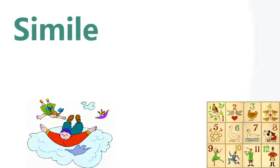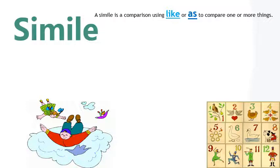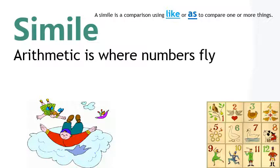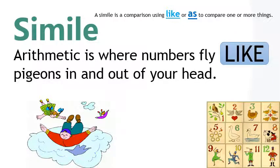Then we have a simile. A simile is a comparison using 'like' or 'as' to compare one or more things — there must be the words 'like' or 'as' inside the verse or stanza. For example: 'Arithmetic is where numbers fly like pigeons in and out of our head.' We've got the word 'like', and it compares the numbers that fly with the pigeons. As soon as we see 'like', we know it is a simile.